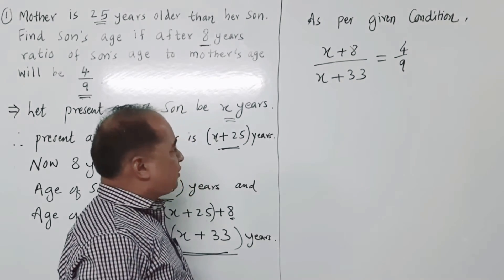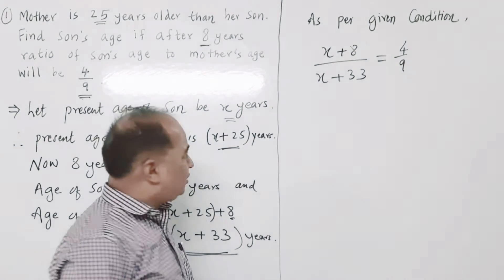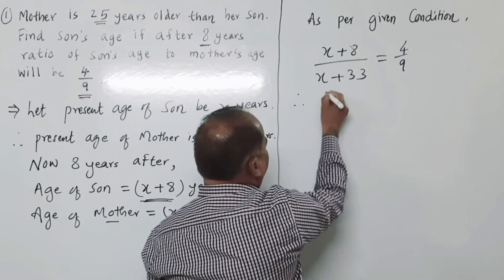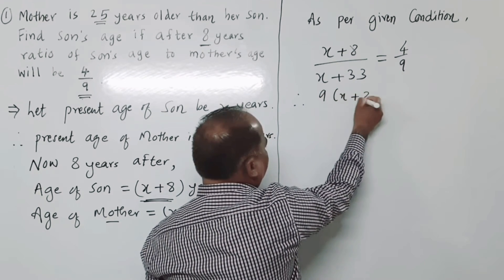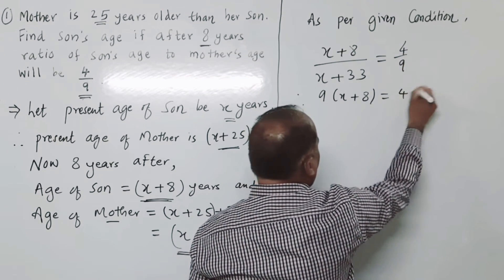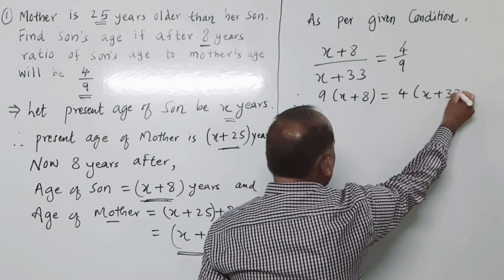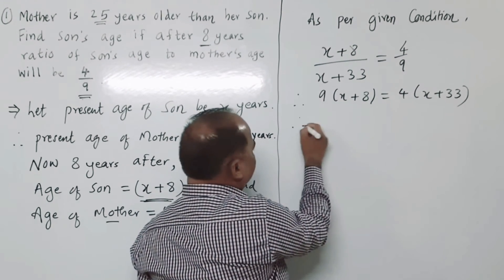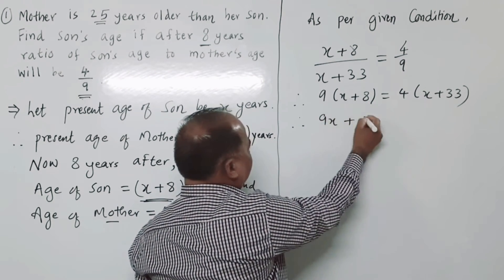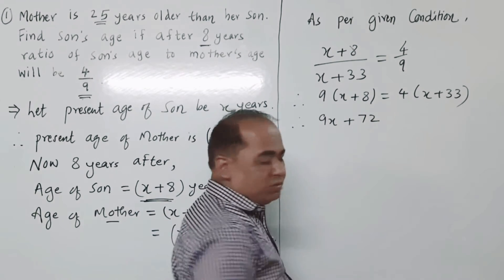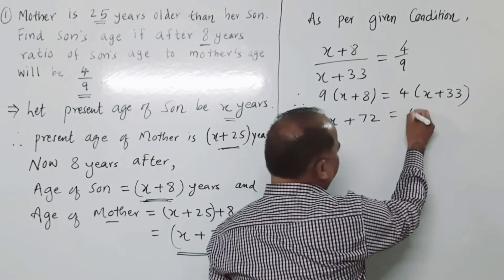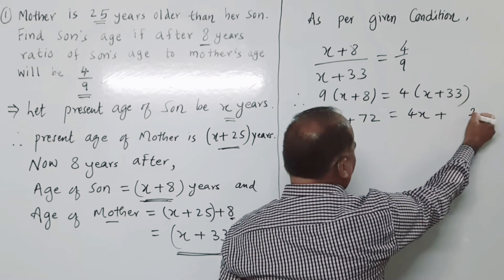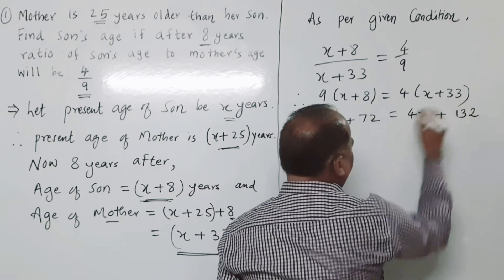Now solve this equation by cross multiplication: 9 into (x + 8) is equal to 4 into (x + 33). So 9x plus 72 is equal to 4x plus 132.